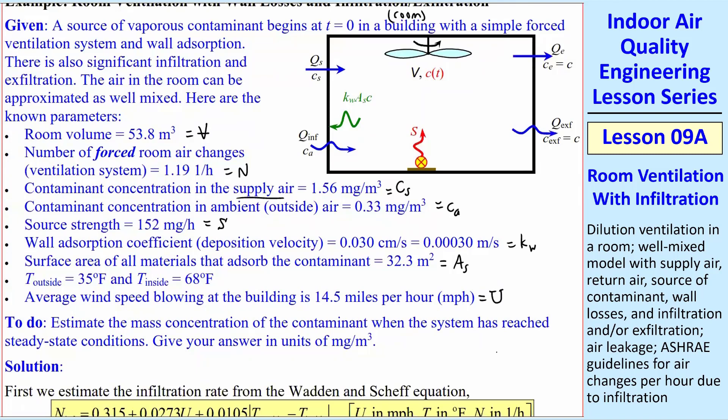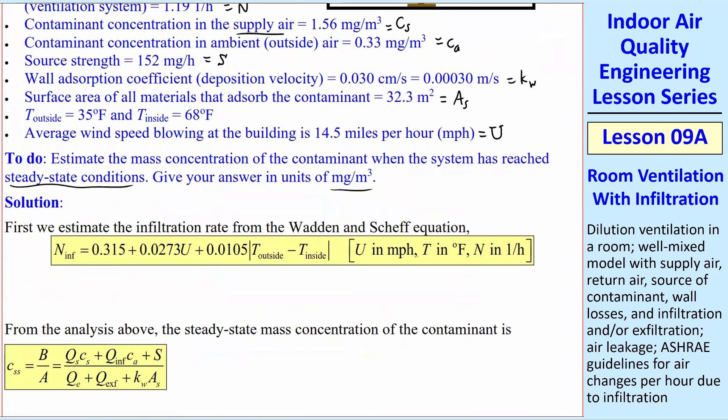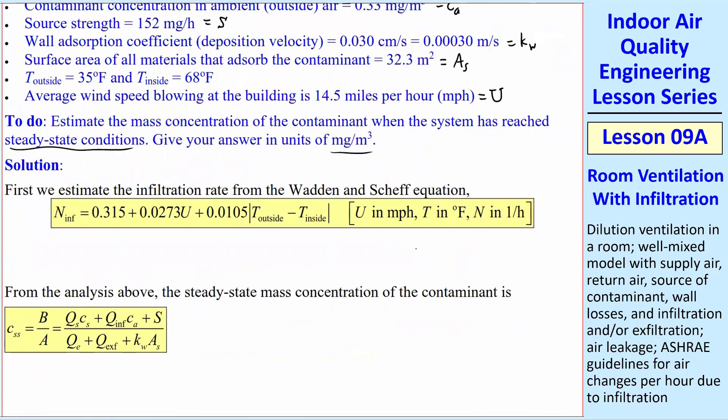And we need to estimate the mass concentration of the contaminant at steady state conditions in milligram per meter cubed. So this is similar to previous problems, except now we have to go to this Wadden and Scheff equation to figure out N_inf, plug in U and T outside minus inside absolute value, and you get N infiltration is 1.057, one over hours.